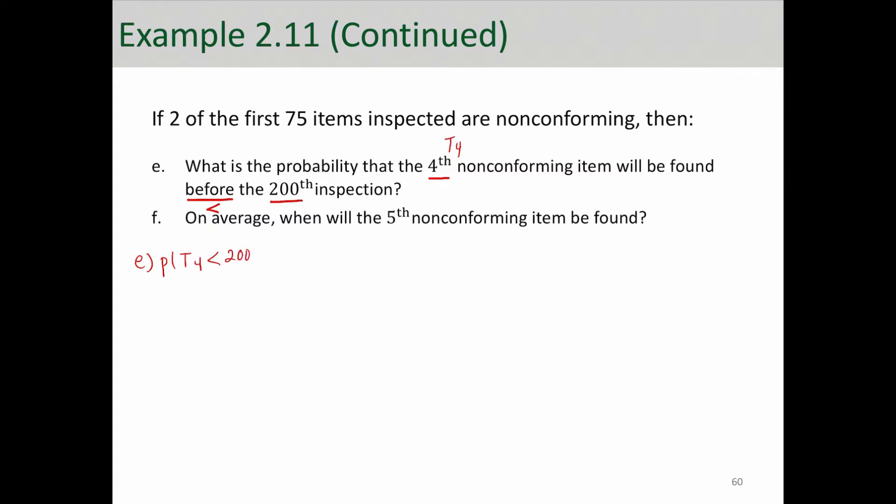But given this condition, if two of the first 75 items inspected are non-conforming, what that means is that out of 75 items, two of them were non-conforming. We're not exactly sure on which trials we found those two non-conformings, but we just know that out of 75, we had two successes. That is a binomial random variable, N75 equals 2.